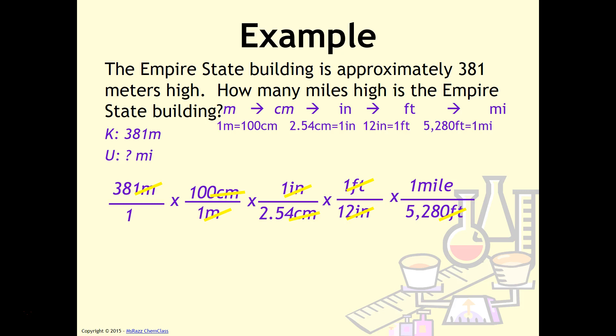Again, this is another calculation that you want to make sure you multiply by everything on top and divide by everything on bottom. So that when you do this, you'll end up with .237 miles.